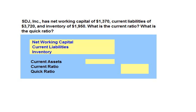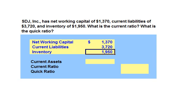SDJ Inc. has net working capital of $1,370, current liabilities of $3,720, and inventory of $1,950. What is the current ratio, and what is the quick ratio?